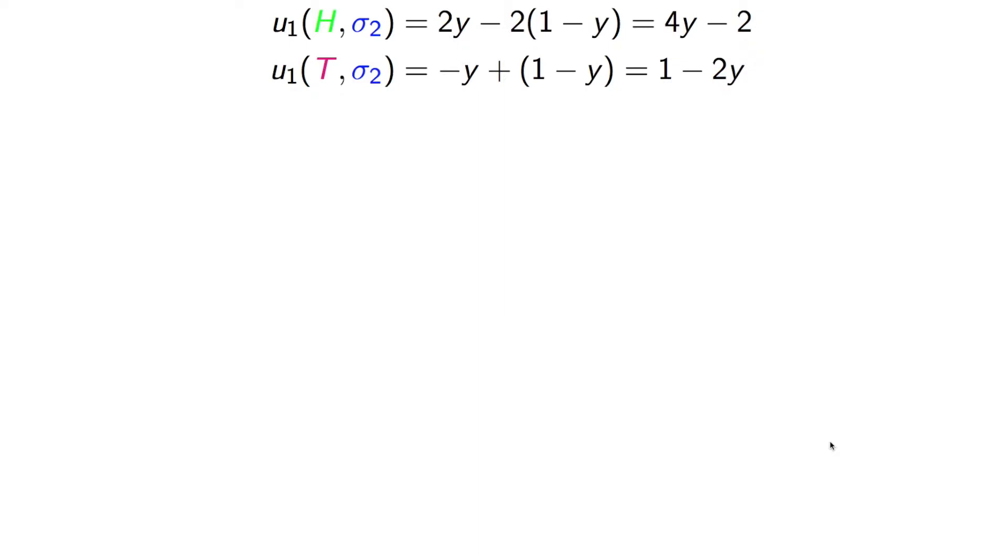If we consider the utility to player 1 when player 1 always plays heads and player 2 plays a mixed strategy, where sigma 2 is a probability distribution over the strategies of player 2. So sigma 2 is y and 1 minus y, where y is the probability with which player 2 plays heads, and 1 minus y is the probability with which player 2 plays tails. We get these two expressions for the utility, just working out the expected probabilities.